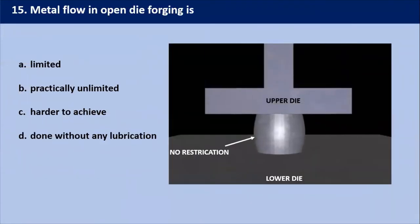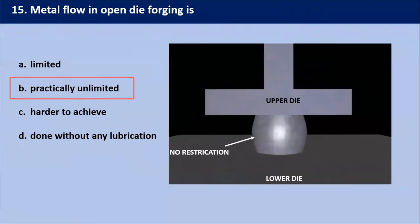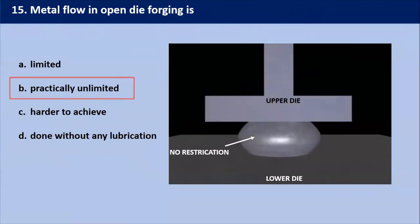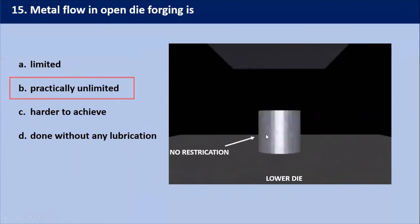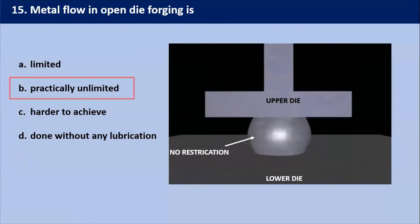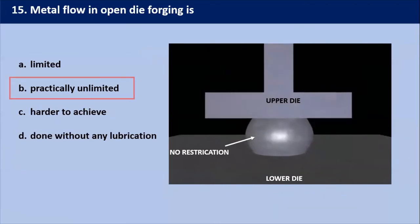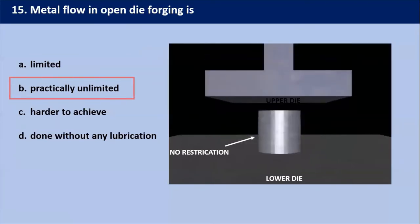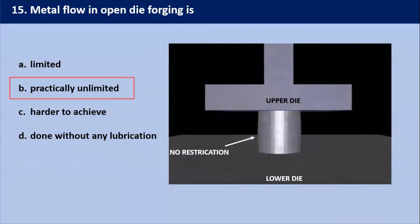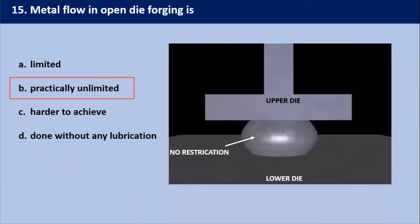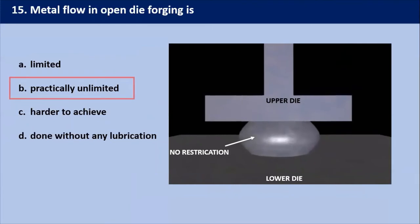Metal flow in open die forging is? As shown in this diagram of open die forging, the work piece is compressed between two flat dies, allowing the metal to flow without any restriction in the sideward direction relative to the die surface. That's why metal flow in open die forging is practically unlimited — and the answer is B.